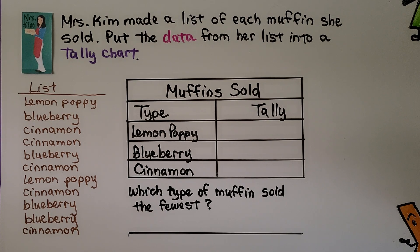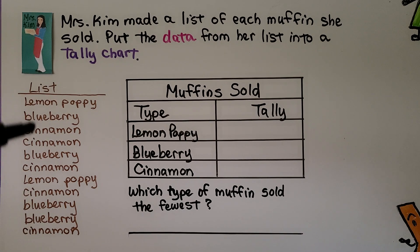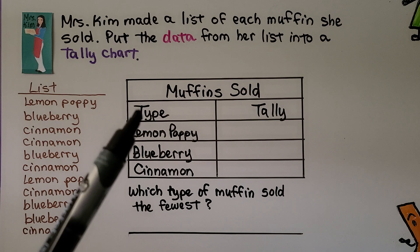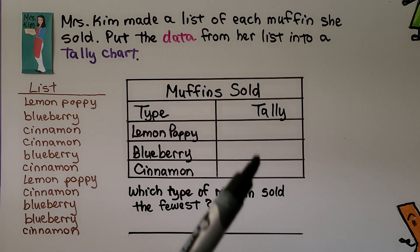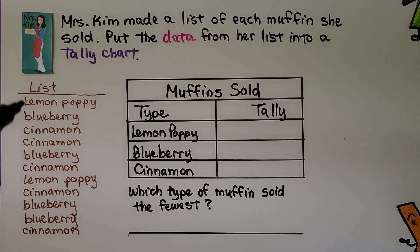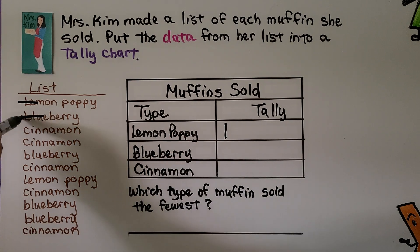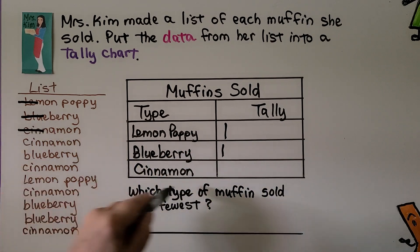This problem says Mrs. Kim made a list of each muffin sold — put the data from her list into a tally chart. Here's the list: lemon poppy, blueberry, cinnamon, and they repeat. The tally chart has a column for muffin types and a column for tally marks. Starting with lemon poppy — we cross it off the list and make a tally mark. Then blueberry gets a tally mark, then cinnamon gets a tally mark.